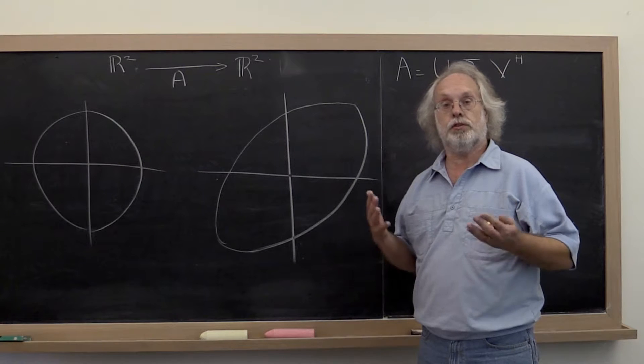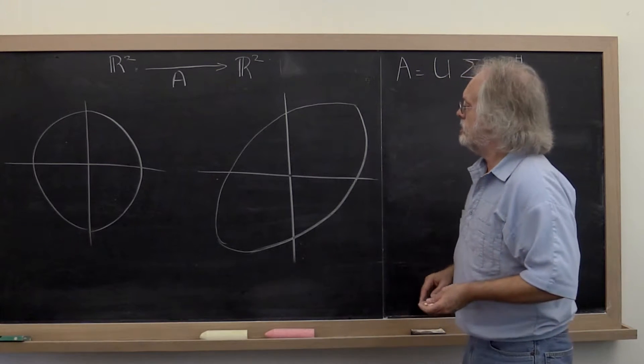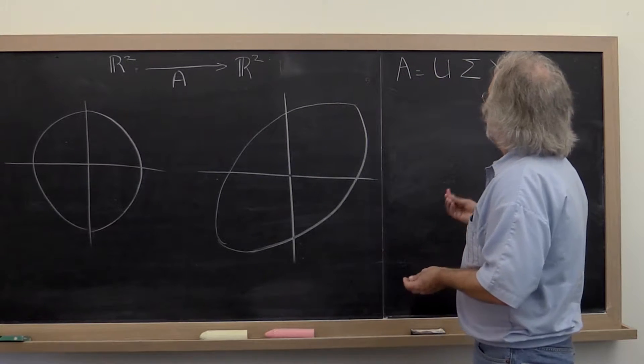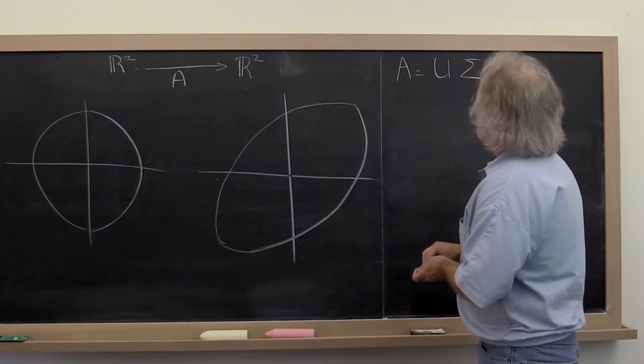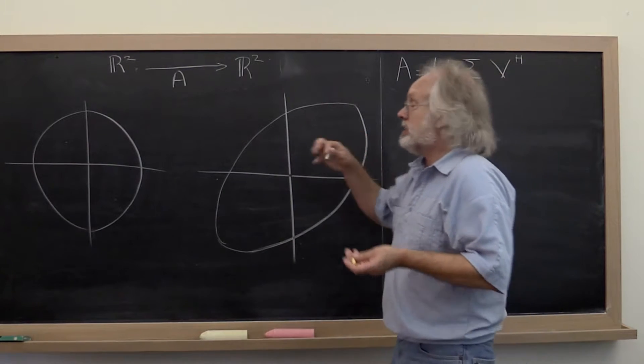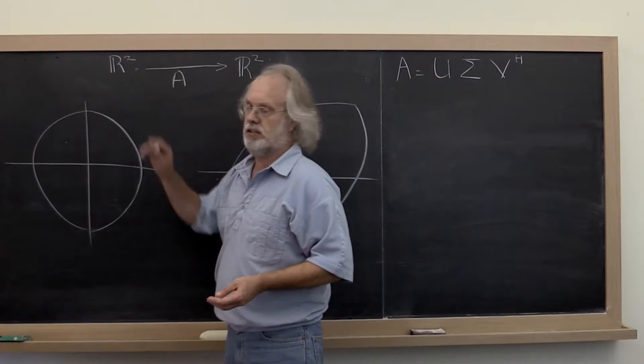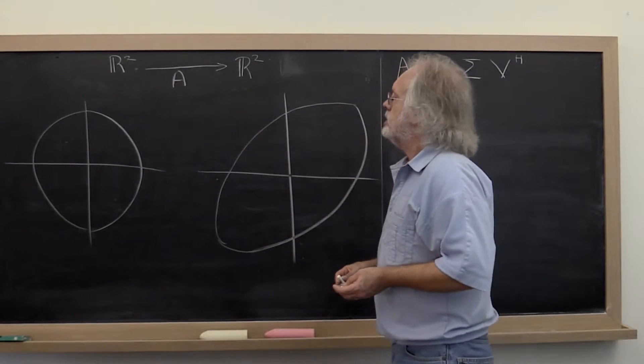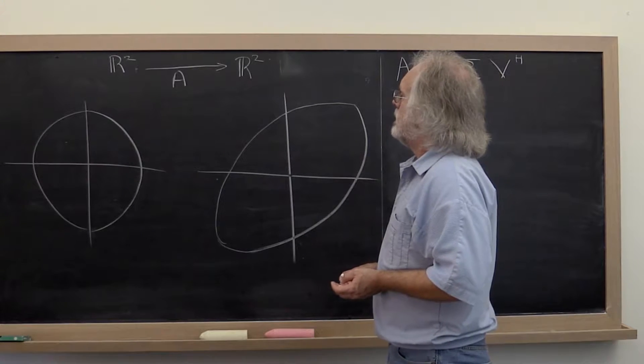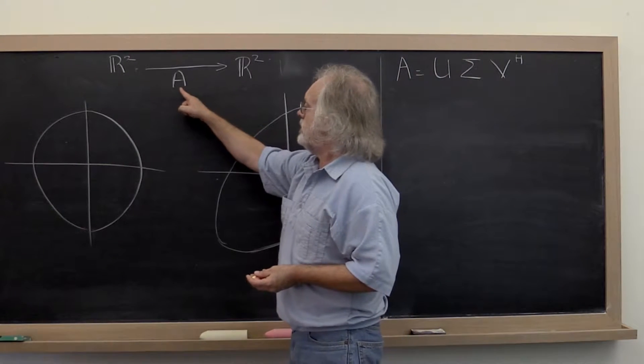Let's have a look at a geometric interpretation of the singular value decomposition. To give a geometric interpretation, it's a little hard to go beyond R2 to 3D space. Notice that therefore we're going to look at a matrix.